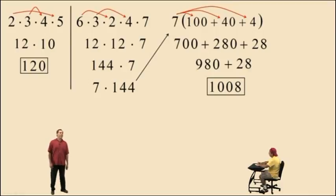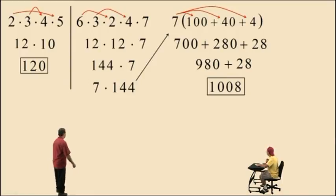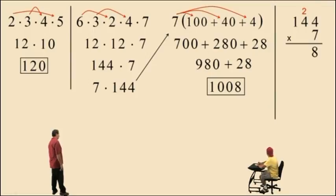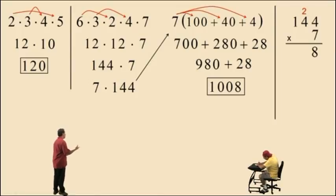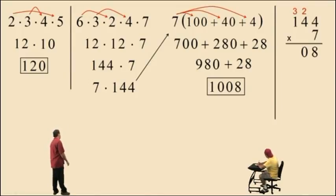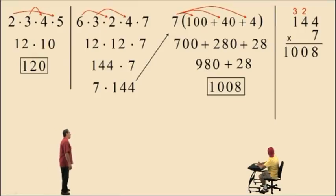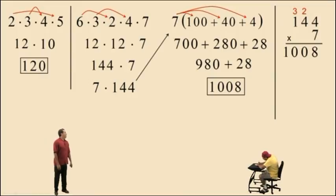Some of you might want to use the vertical format to do 144 times 7 — you can do that too. 7 times 4 is 28, write down the 8, carry the 2. Next column: 7 times 4 is 28, add 2 from the carry gives 30, put a 0 and carry the 3. Then 7 times 1 is 7, add 3 gives 10 — so the answer is 1008. That's enough for now, and we'll see you again soon.